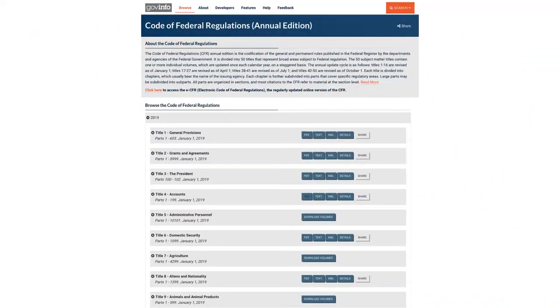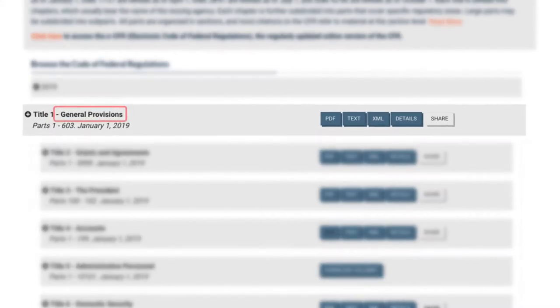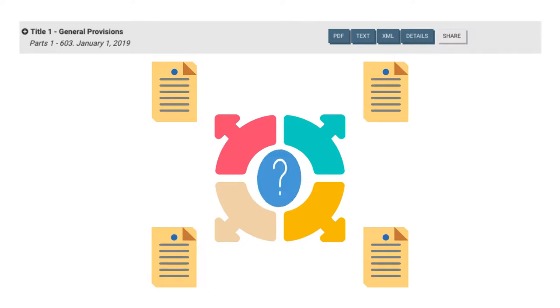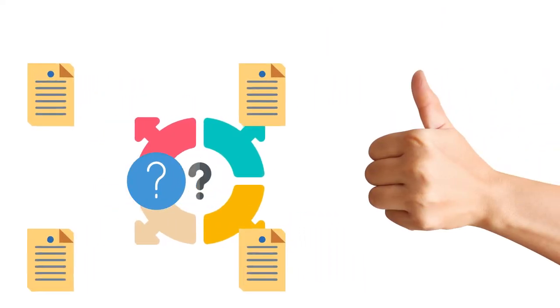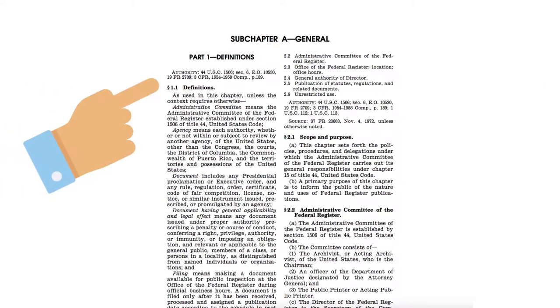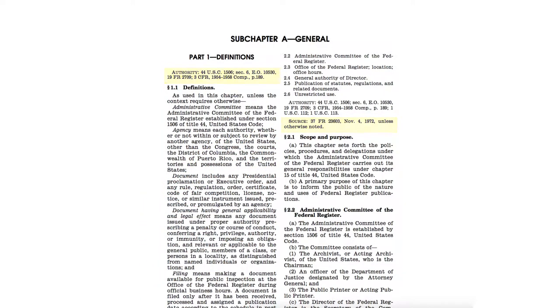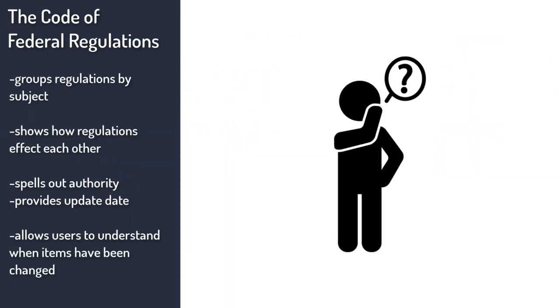The Code of Federal Regulations organizes regulations by subject. This process takes individual regulations and groups them together, providing understanding of how regulations affect each other and allowing for enforcement. The Code of Federal Regulations spells out the authority for regulations and a source note that indicates when each section was last updated, allowing users to understand when items have been changed.